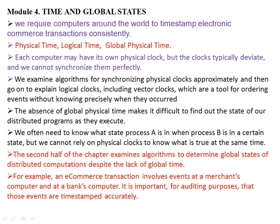The second half of this chapter examines algorithms to determine the global state of distributed computing systems despite the lack of global time. For example, an e-commerce transaction involves events at the merchant's computer and the bank's computer. For auditing purposes, those events must be timestamped accurately. By using logical time, we can make the time of all systems approximately equal, instead of relying on a global physical time.